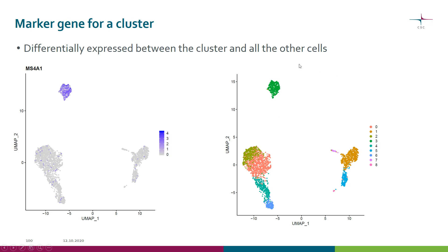So what is a marker gene? On the right hand side we have a UMAP visualization of clusters of cells — nine clusters in total, colored according to the cluster they belong to. On the left hand side we have exactly the same cells, but colored based on the expression level of a particular gene. This gene is expressed highly in cluster three, whereas there is very little expression in the other cells. So we can say that this gene is a good marker gene for this cluster.